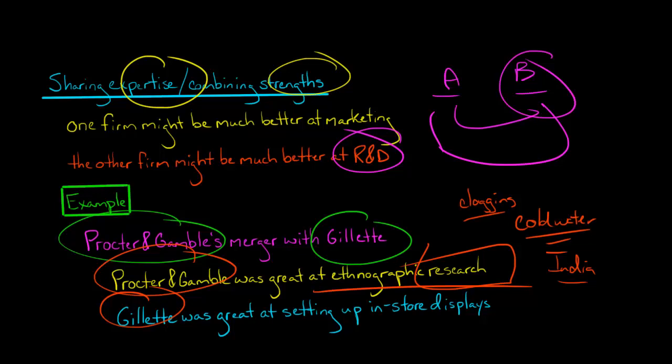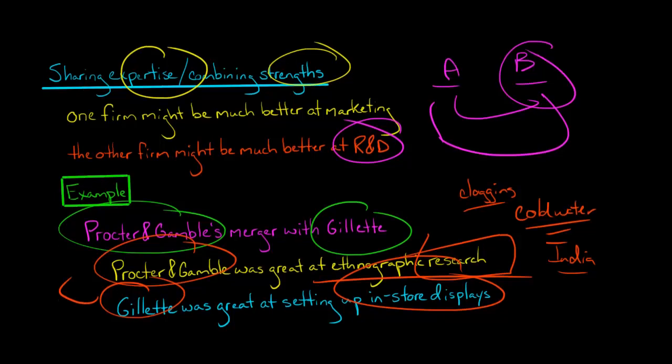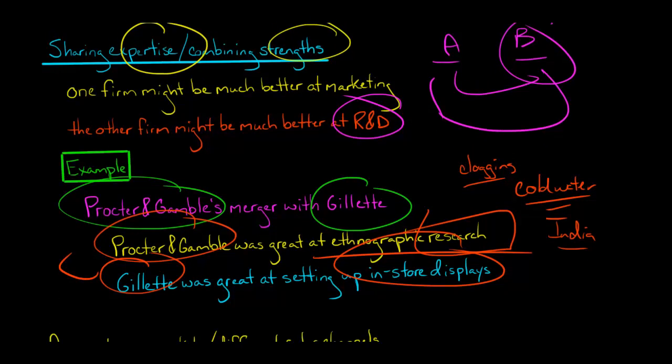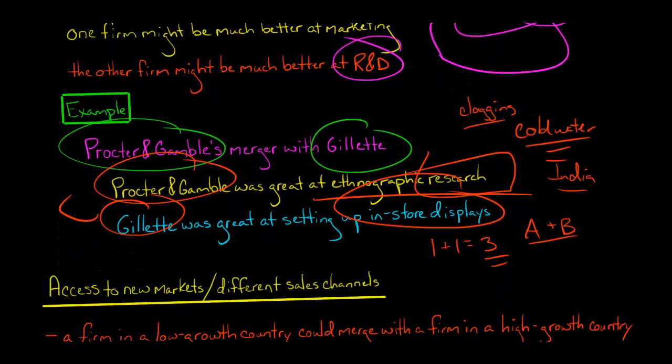Gillette brought other things to the table. For example, they were really good at setting up indoor and in-store displays of their products. And so they could in turn share knowledge in their expertise with Procter & Gamble. So each company is benefiting from each other and they can end up having more revenue. The whole idea behind synergies is one plus one equals more than two. It's equal three or four or something like that. So they're sharing this expertise. They're having a higher combined revenue than if the two firms had been operated independently.